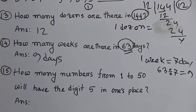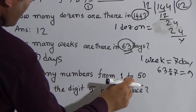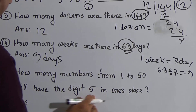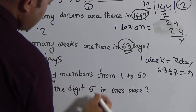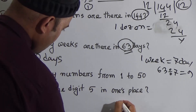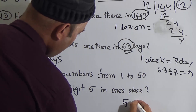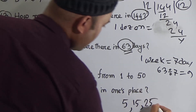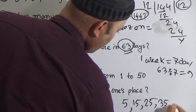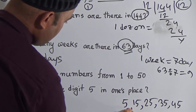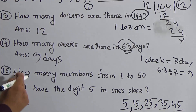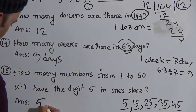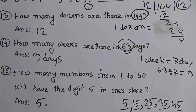How many numbers from 1 to 50 have the digit 5 in the ones place? From 1 to 10 it is 5; from 11 to 20 it is 15; from 21 to 30 it is 25; from 31 to 40 it is 35; and from 41 to 50 it is 45. So there are 1, 2, 3, 4, 5 — five such numbers. The answer is 5.